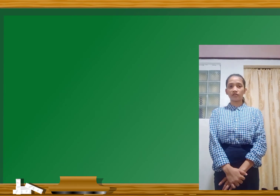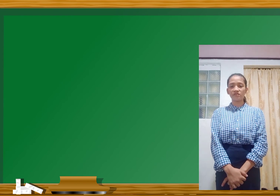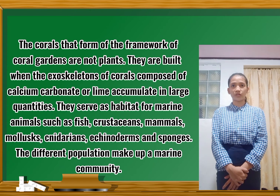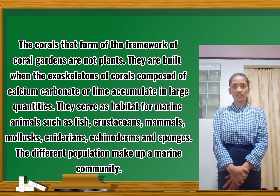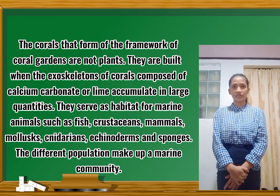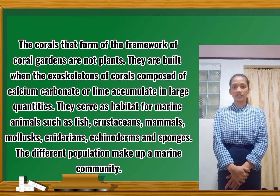We have discussed everything about the interactions among living things in coral reefs and tropical rainforests. Again, class, what are the interactions among living things in coral reefs? The corals that form the framework of coral gardens are not plants. They are built with the exoskeletons of corals composed of calcium carbonate or lime, which accumulate in large quantities. They serve as habitat for marine animals such as fish, crustaceans, mammals, mollusks, cnidarians, echinoderms, and sponges. The different populations make up a marine community.